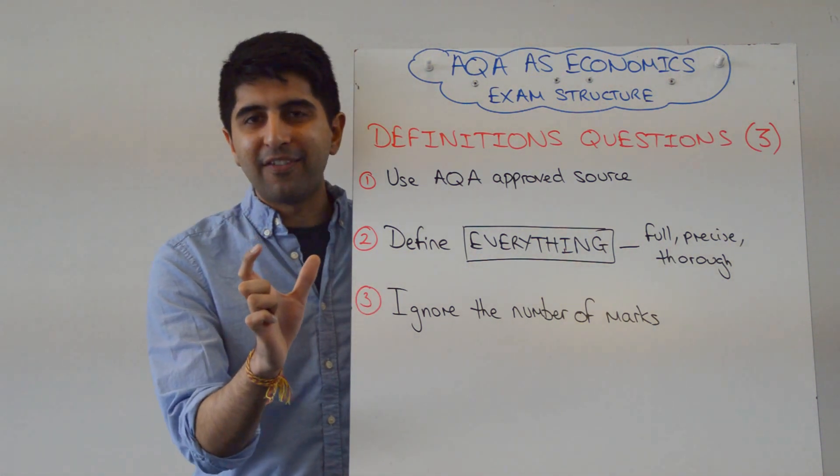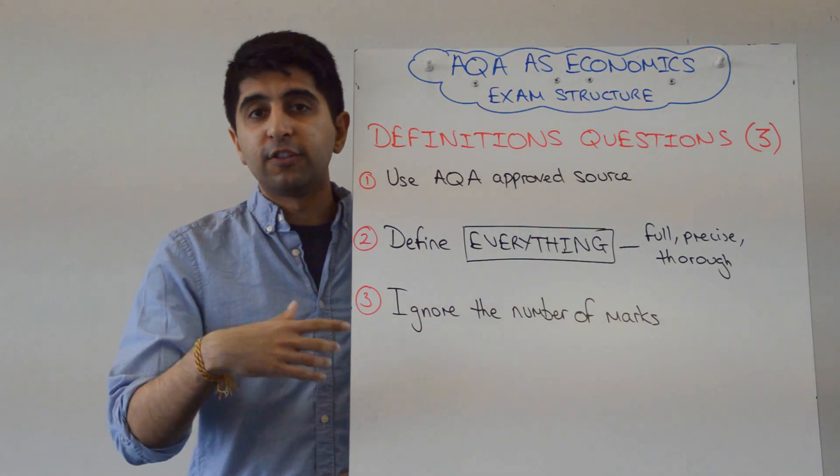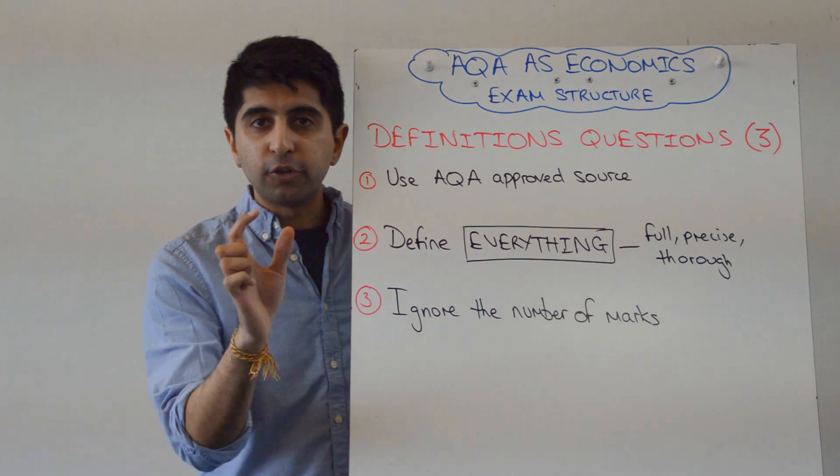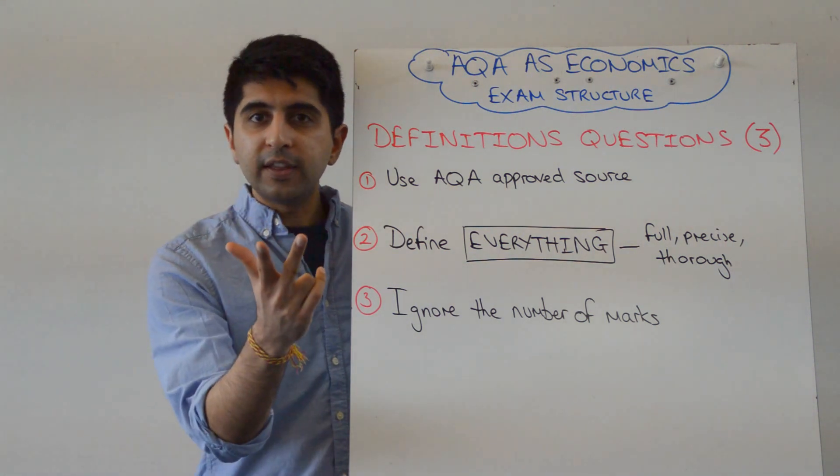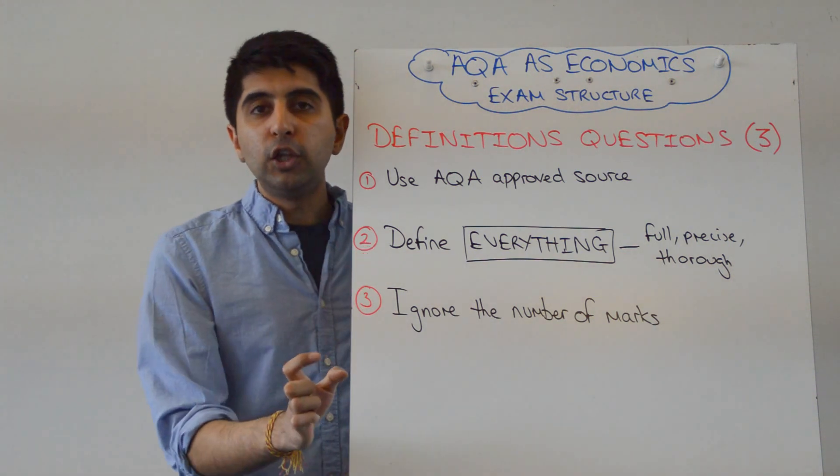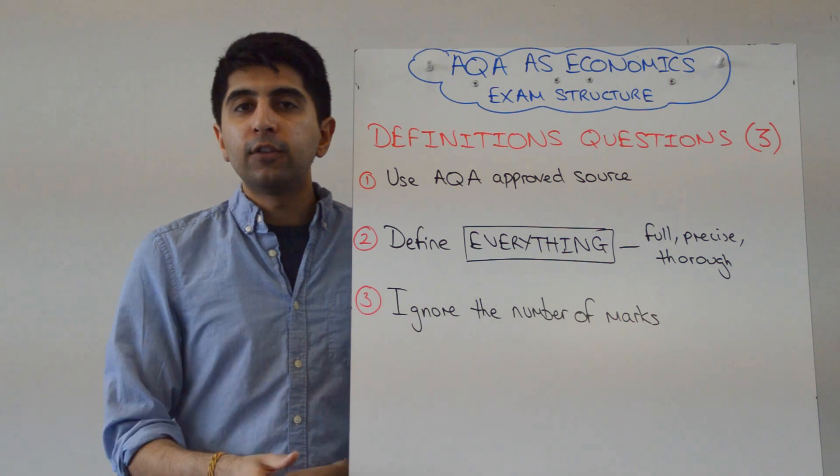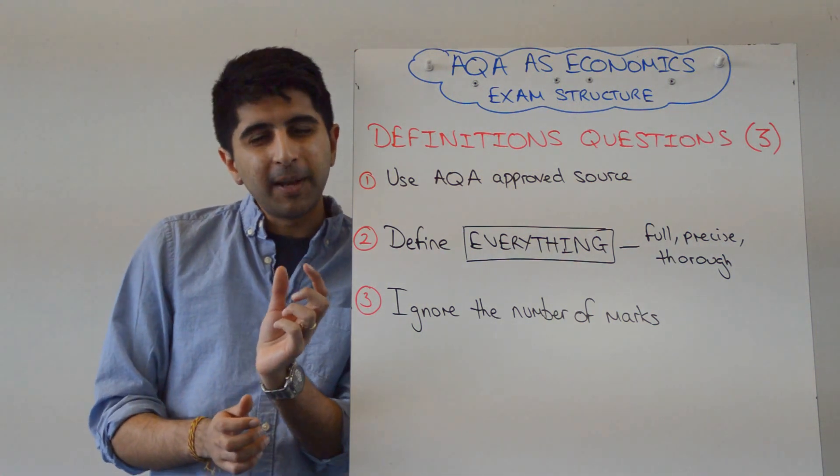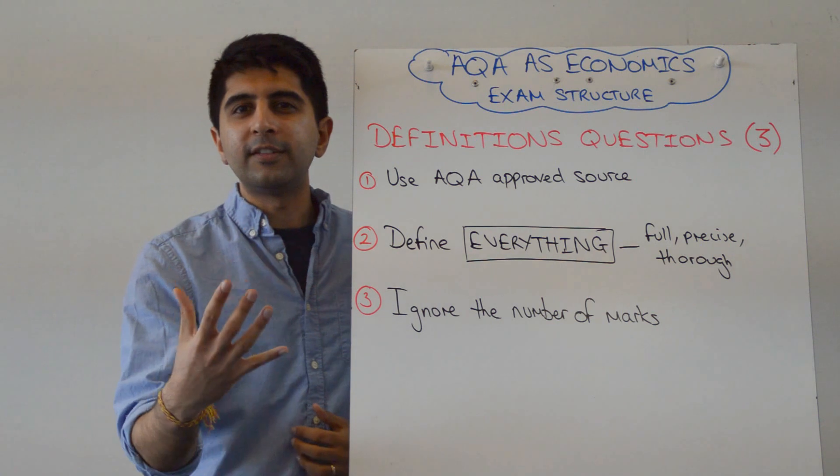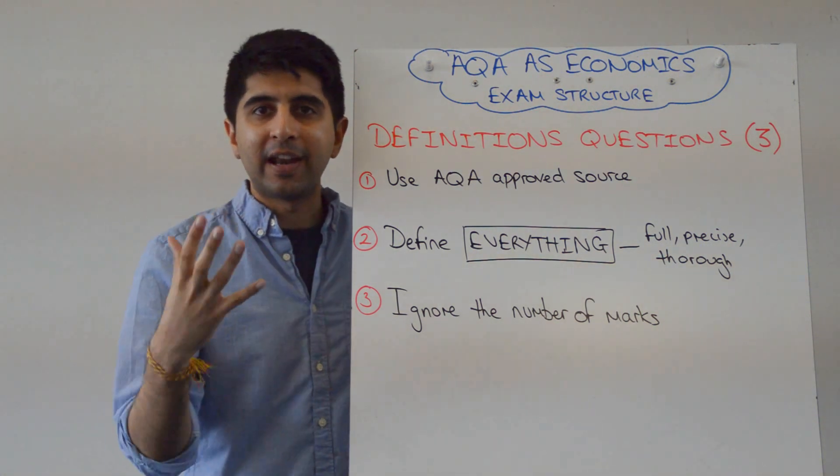But if there are two things in the definition, two separate parts, such as define real disposable income, then you've got two things to define. You've got to show the examiner you know what real means. You've got to show the examiner you know what disposable income means. So if there are ever definitions where you've got to define more than one thing, you've got to show understanding of more than just one term. In that sense, define everything.